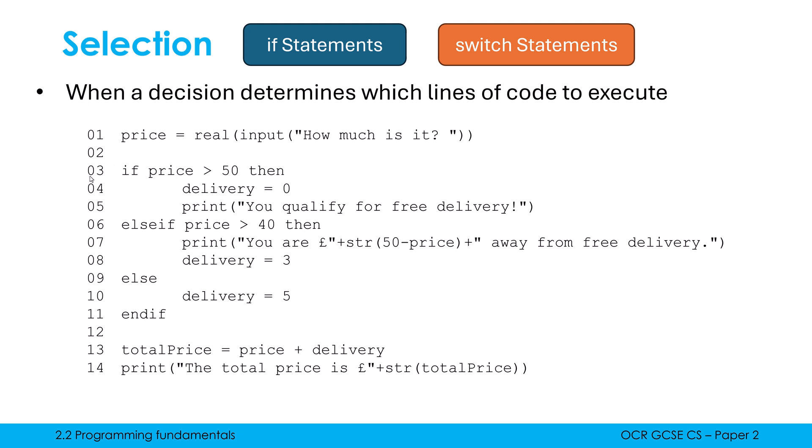So selection is occurring here between line three and line eleven. We've got sequence also happening. Line thirteen, line fourteen are sequence because I've got two or more lines which run back to back. I've also got sequence in line four, line five, and line seven and line eight, where again, two or more lines are running back to back. But ultimately, decisions are getting made here.